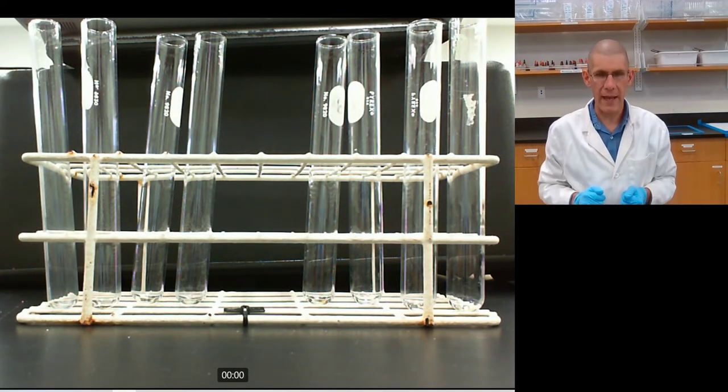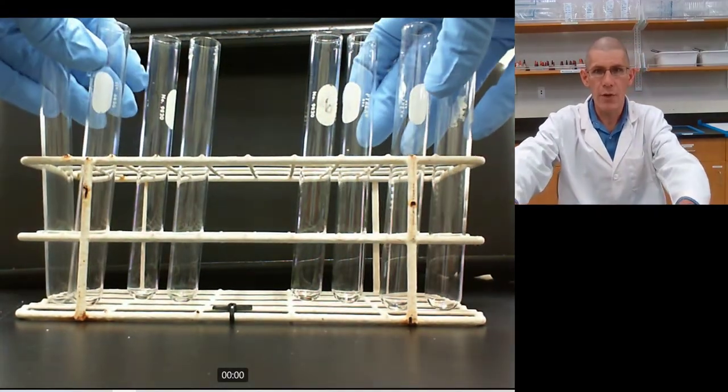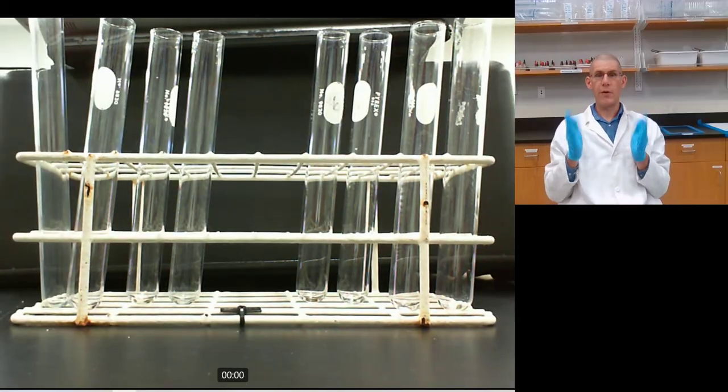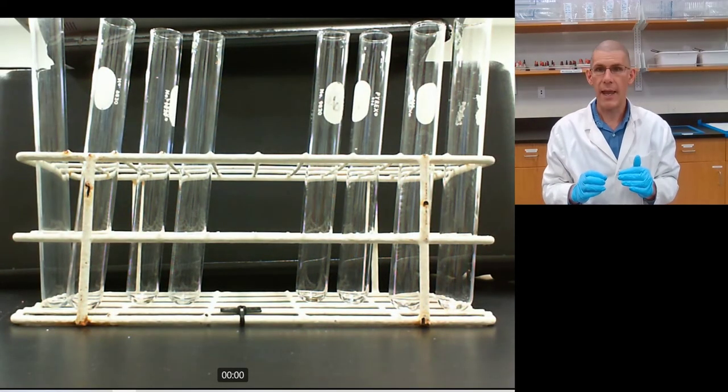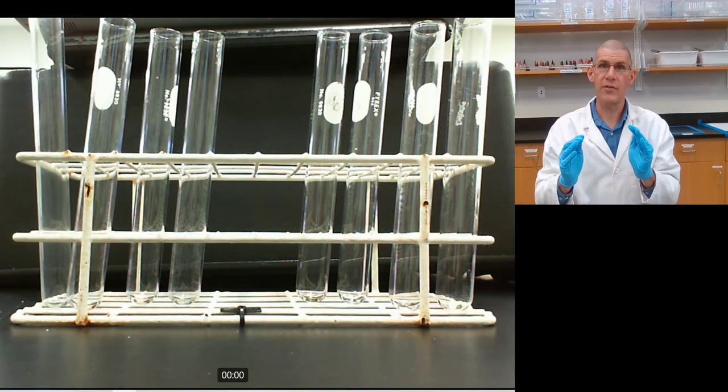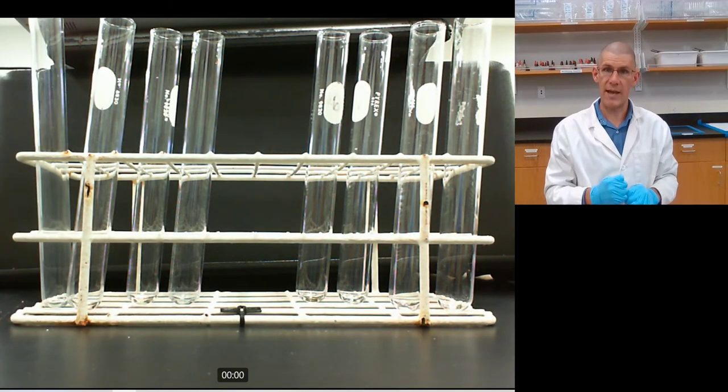So as you see down here, we have a couple of test tubes, about eight in total. And what I'm going to do first is set them up, label them properly, and designate them as positive and negative controls for each of the four reagents. So let's hop to it.